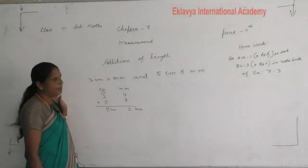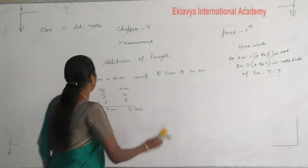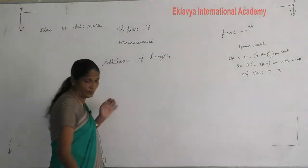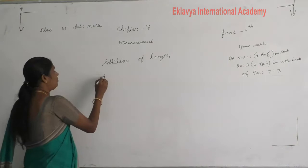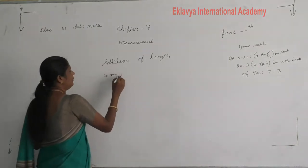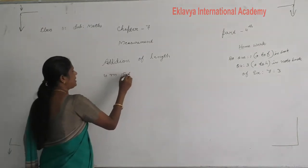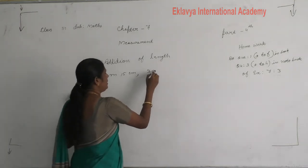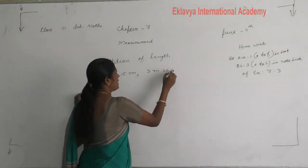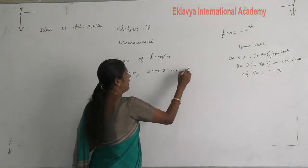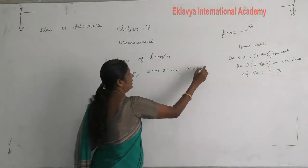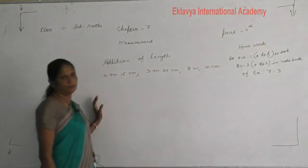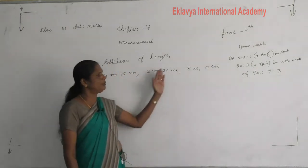Understand? One more. Next example: 4 meter 15 centimeter, then 3 meter 20 centimeter, then 8 meter 10 centimeter. That gives us 1, 2, 3 measurements to add.